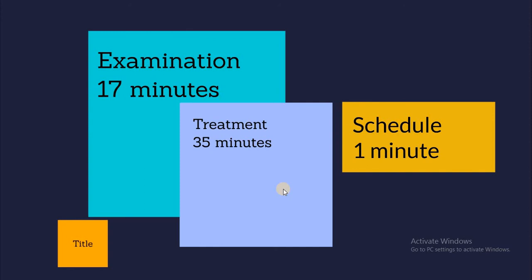That is why we say that if we perform phase one — mechanical treatment — and re-evaluate it after a short period of time, then after a few months we should have the patient recall for maintenance. If the patient undergoes the recall treatment and the healing process succeeds, everything will be fine and there is no need to jump to another step such as the surgical or restorative phase.